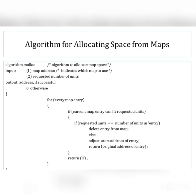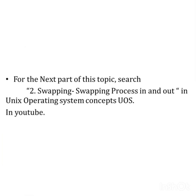Now let's see the algorithm for allocating space from the maps. The input is the map address — which has two fields — and the requested number of units. The output is the address if successful, or zero otherwise. We check every map entry; if the requested units can fit into the current entry, we enter the condition. If the requested units equal the number of units in the entry, we delete the entry from the map; otherwise we adjust the start address of the entry and return the original address. That is the allocation of swap space from the maps.